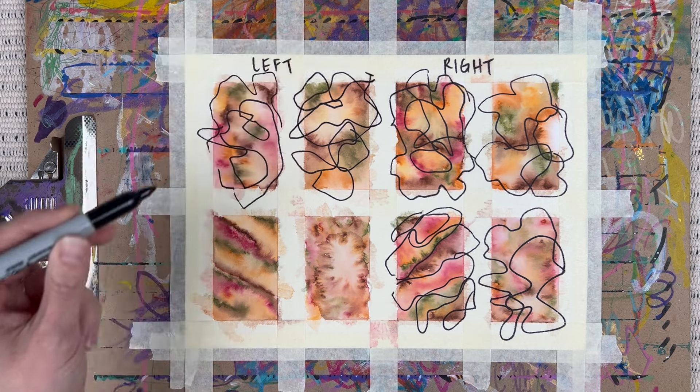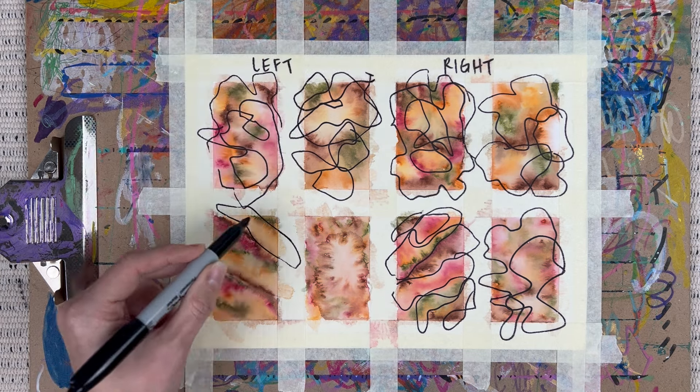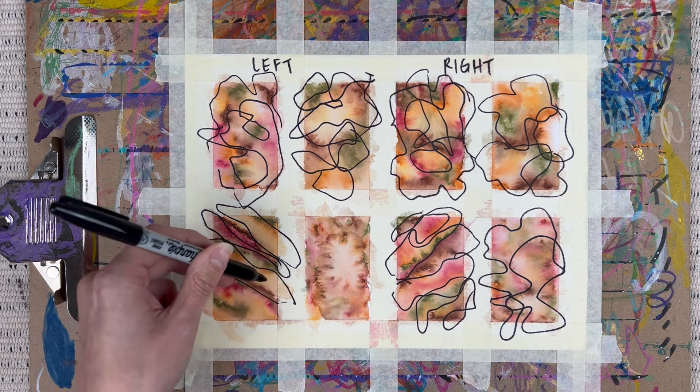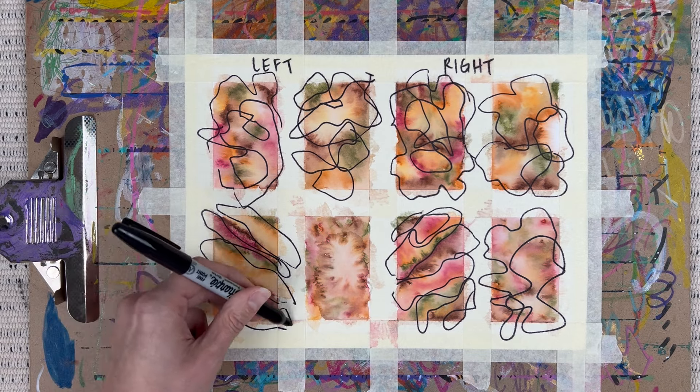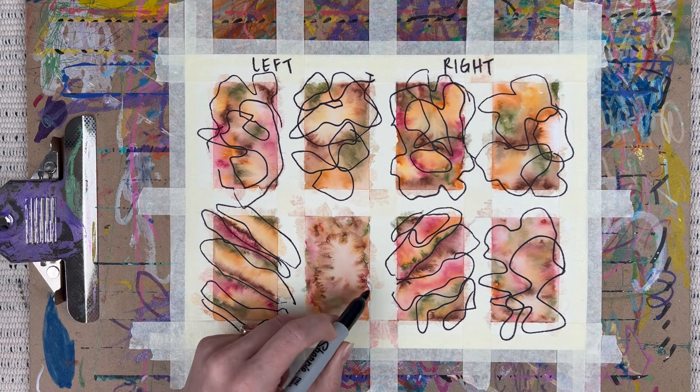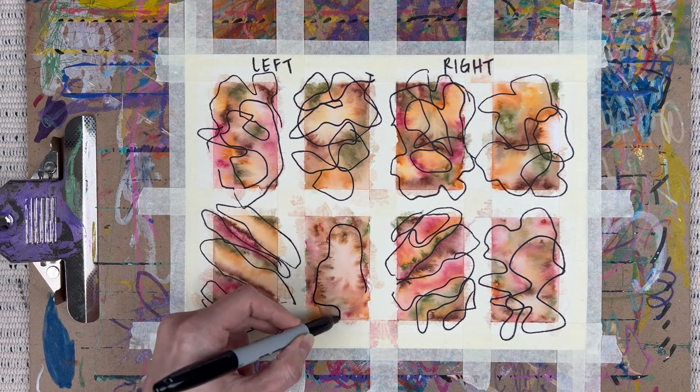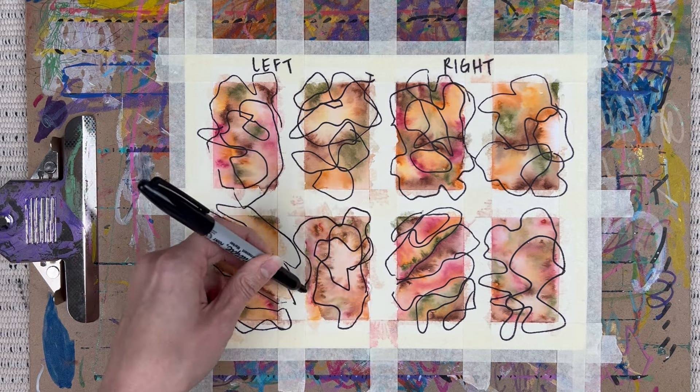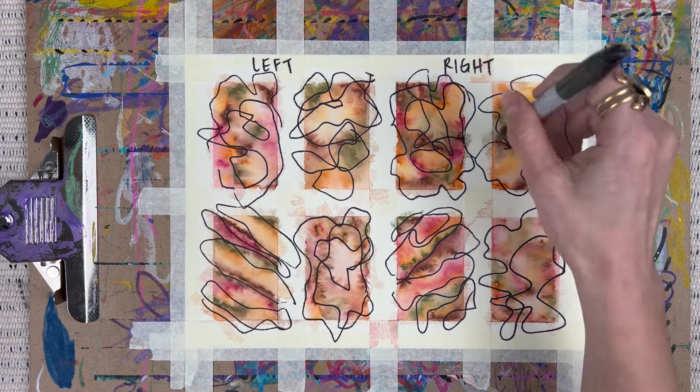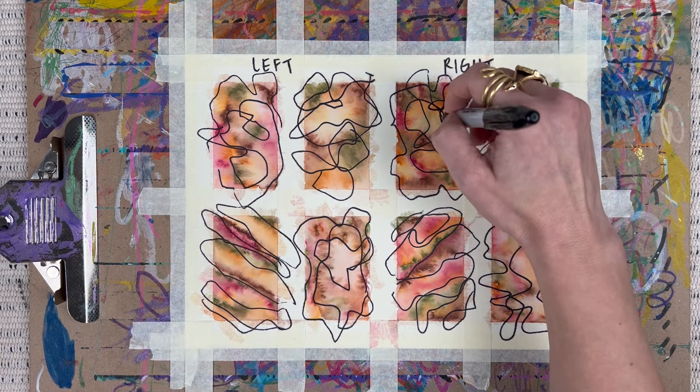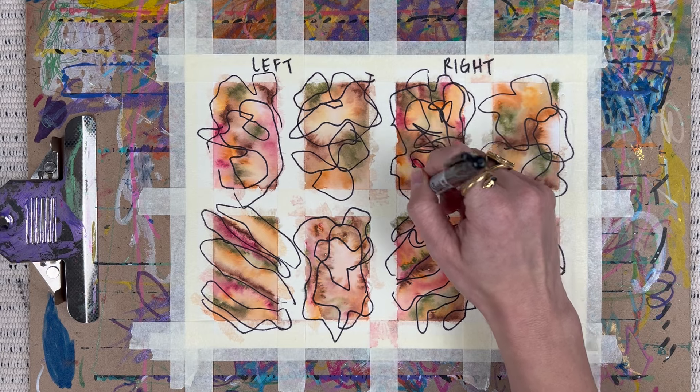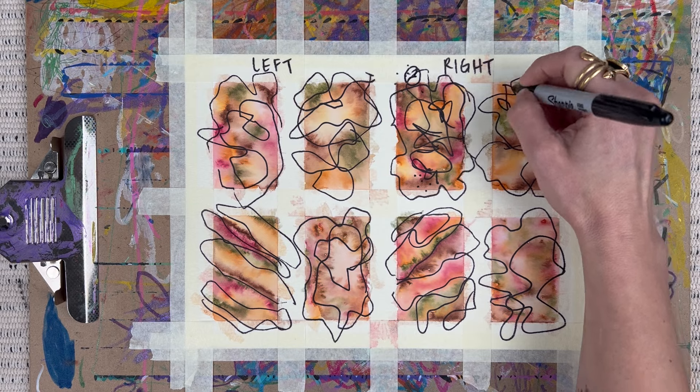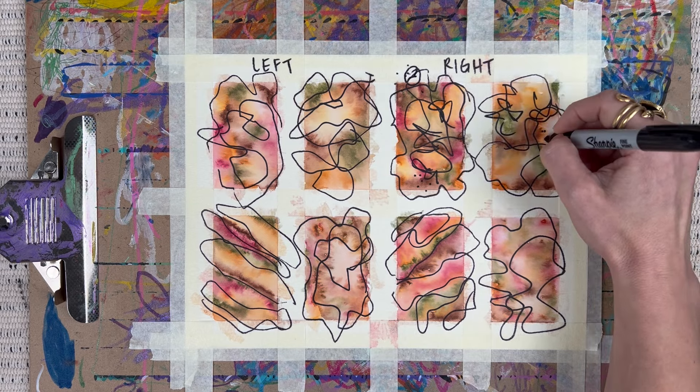This part of the process, whether you're using your right hand or your left hand, I'll speak for myself, is really great for untangling thoughts. So this might be a part of the process now that you've had that watercolor time and the blending with water part of the process and you've gotten hopefully into a relaxed flow state. This part of the process, I like to bring up anything that I might be struggling with or having anxious thoughts or worries about. And I like to imagine I'm getting those worries out onto the paper through the scribbles.